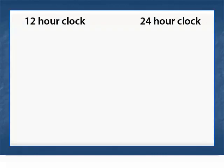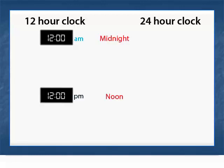Two ways of telling time are the 12-hour clock and the 24-hour clock. The 12-hour clock runs from 12 a.m. midnight to 12 p.m. noon, and then from 12 p.m. noon to 12 a.m. midnight.